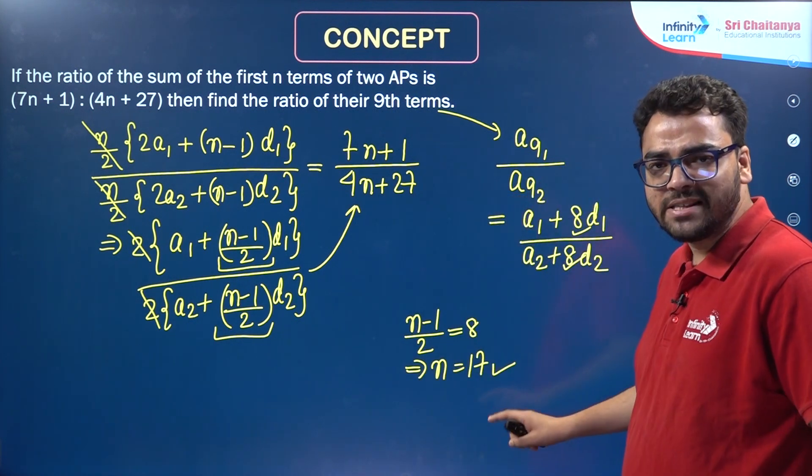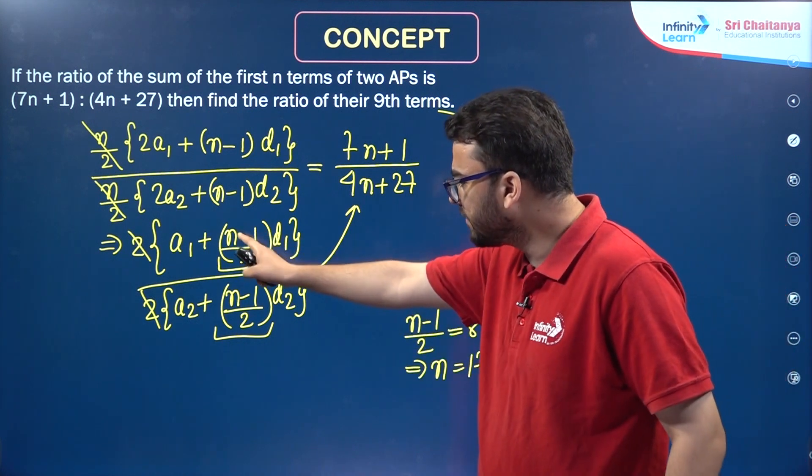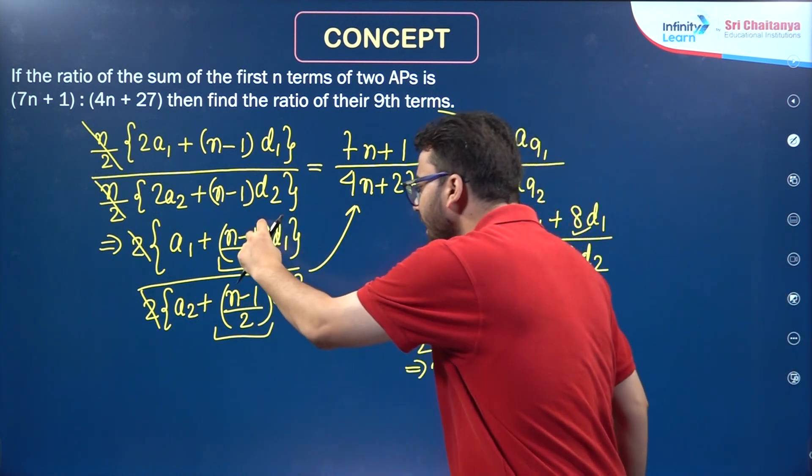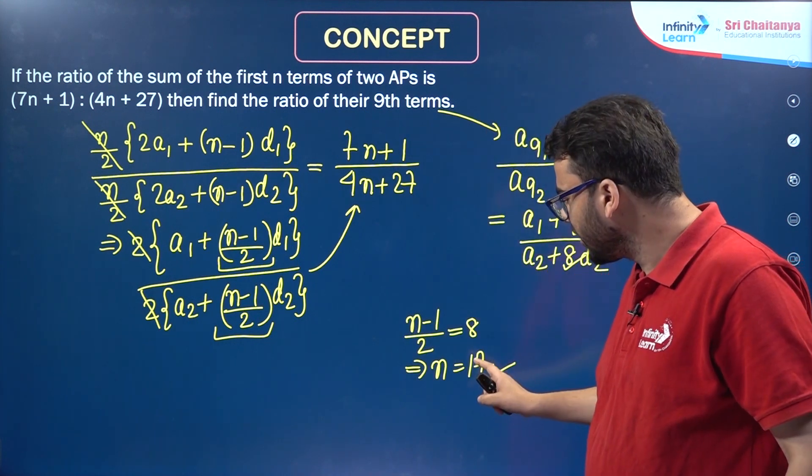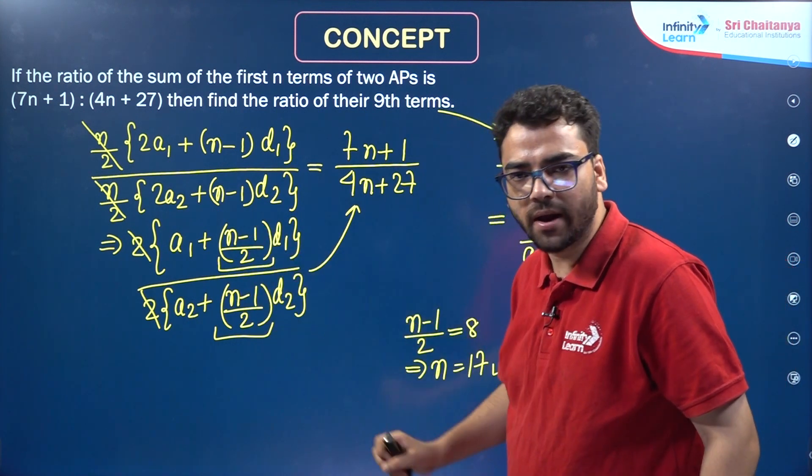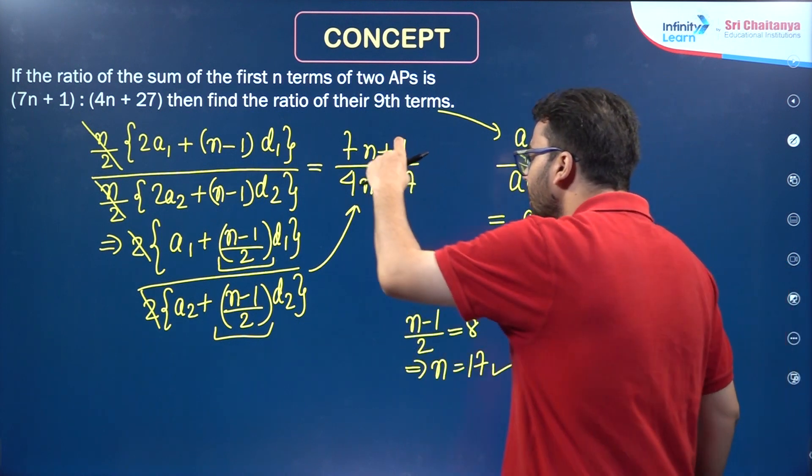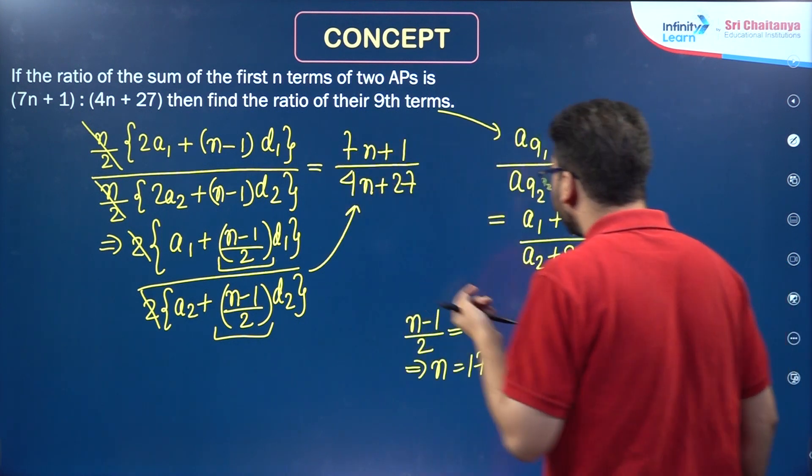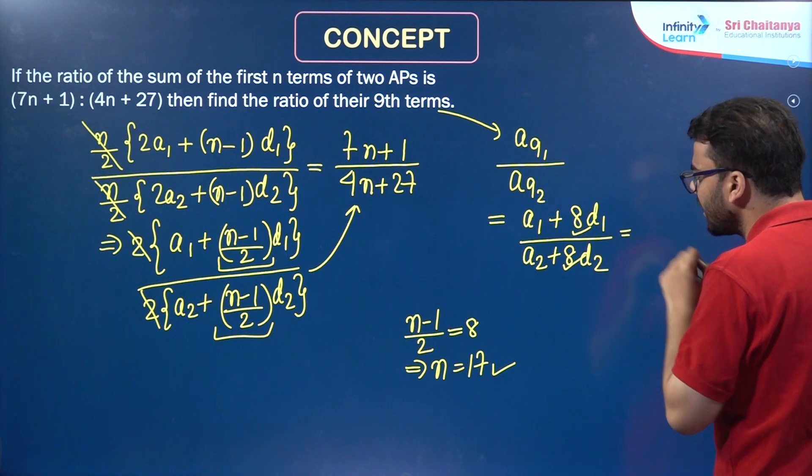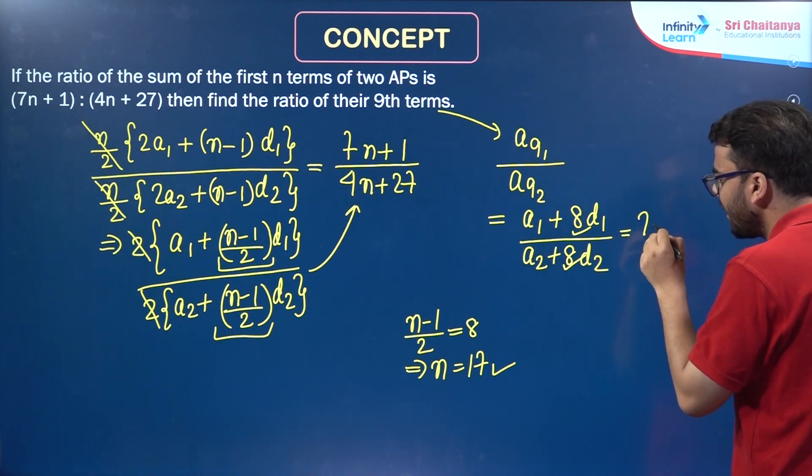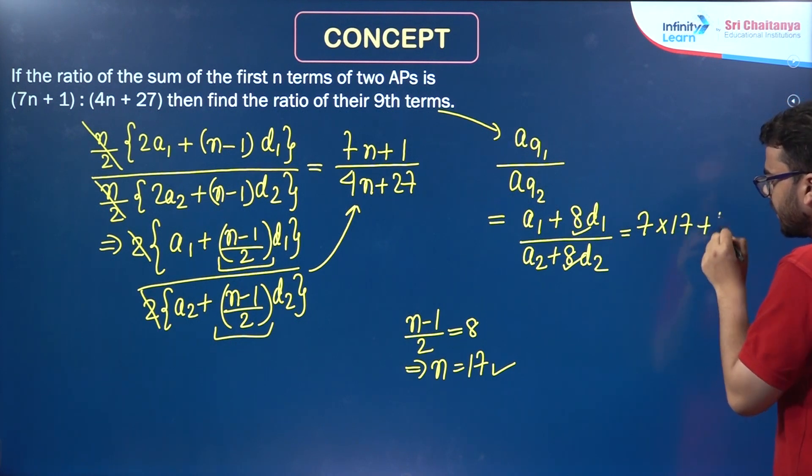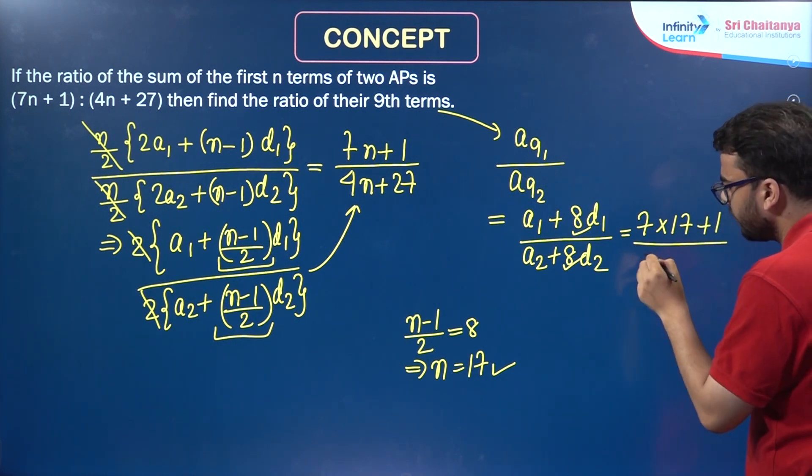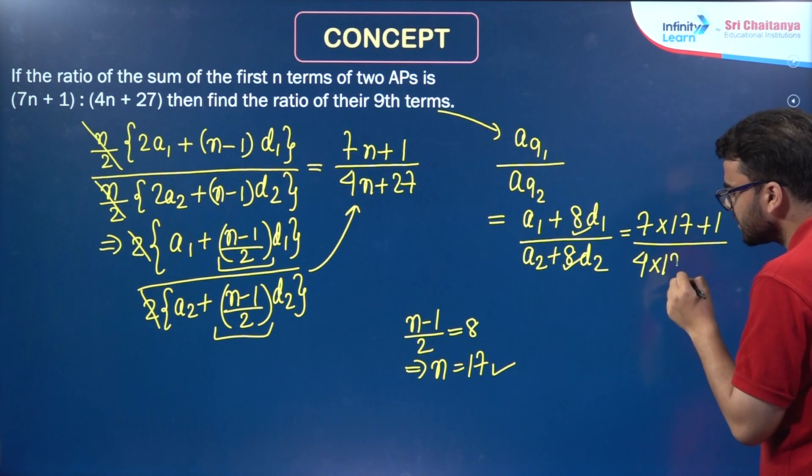So, basically if I put n is equal to 17 over here, you will get 8D1 and 8D2. And if you are putting n is equal to 17 over here, you have to obviously put n is equal to 17 over here as well because then it will be mathematically correct. So, the required ratio is 7 × 17 + 1 divided by 4 × 17 + 27.